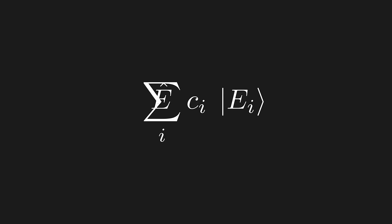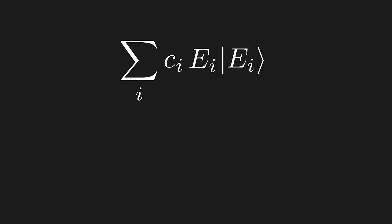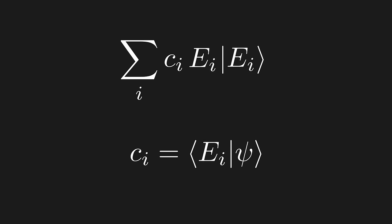Then, we can move the operator into the sum. Since these are eigenvectors, the operator will just give us the corresponding eigenvalue. Now, what about the coefficient ci? Remember that we previously derived the following expression for the coefficients, and if you don't remember, it's really easy to verify.